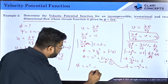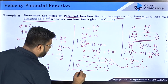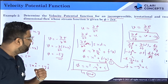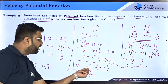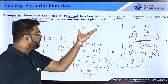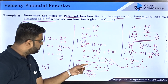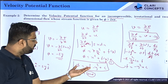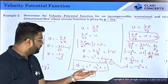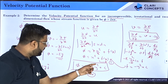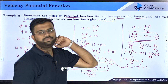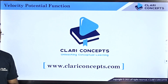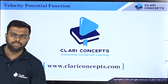Substituting back, the velocity potential function is φ = x² − y² + C. Now verify this: differentiating with respect to x gives 2x, which matches u = 2x — correct. Differentiating with respect to y gives −2y, which matches v = −2y — correct. So the answer is verified. Thank you for joining us on this lecture. For more conceptual videos, you can log in to our website clarityconcepts.com. See you in the next class.